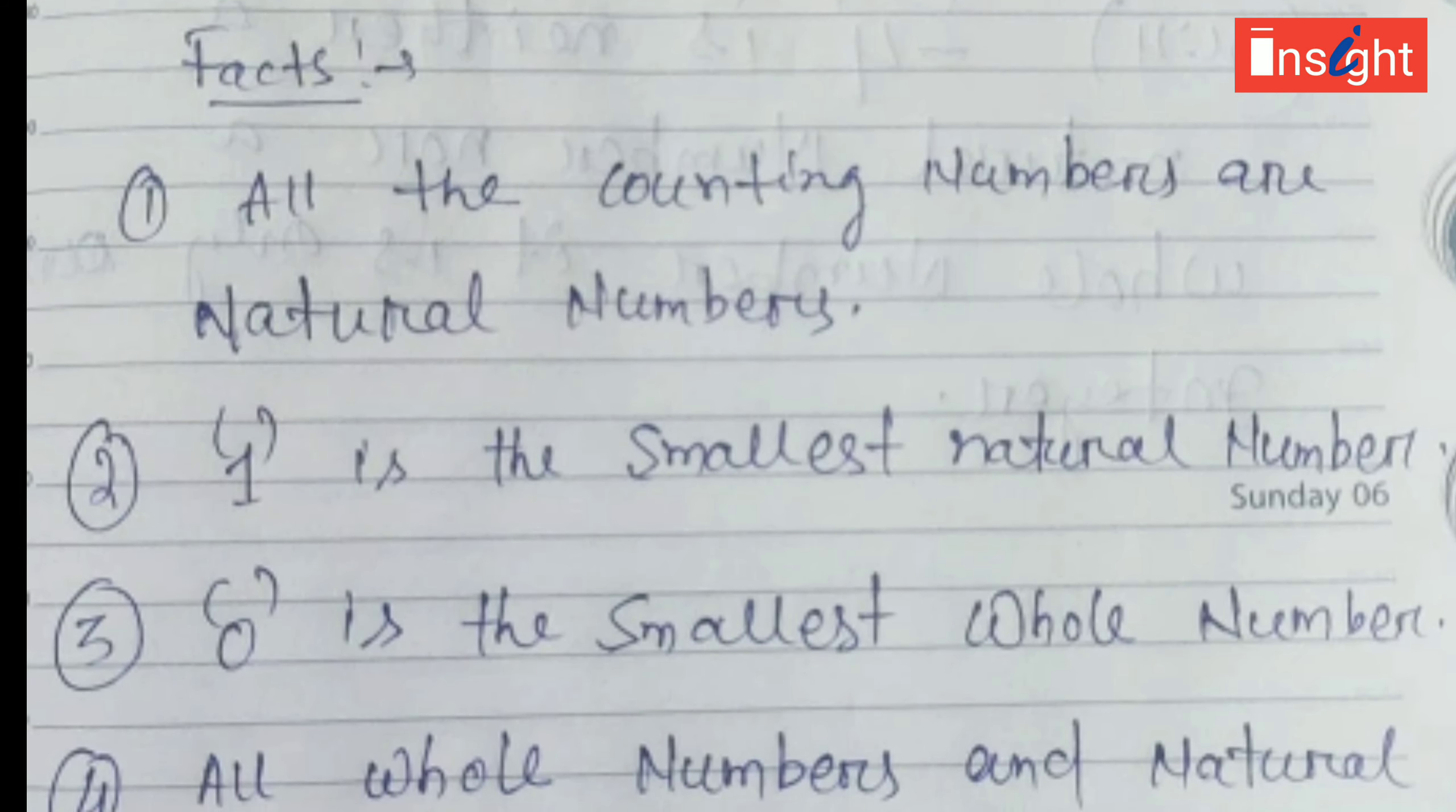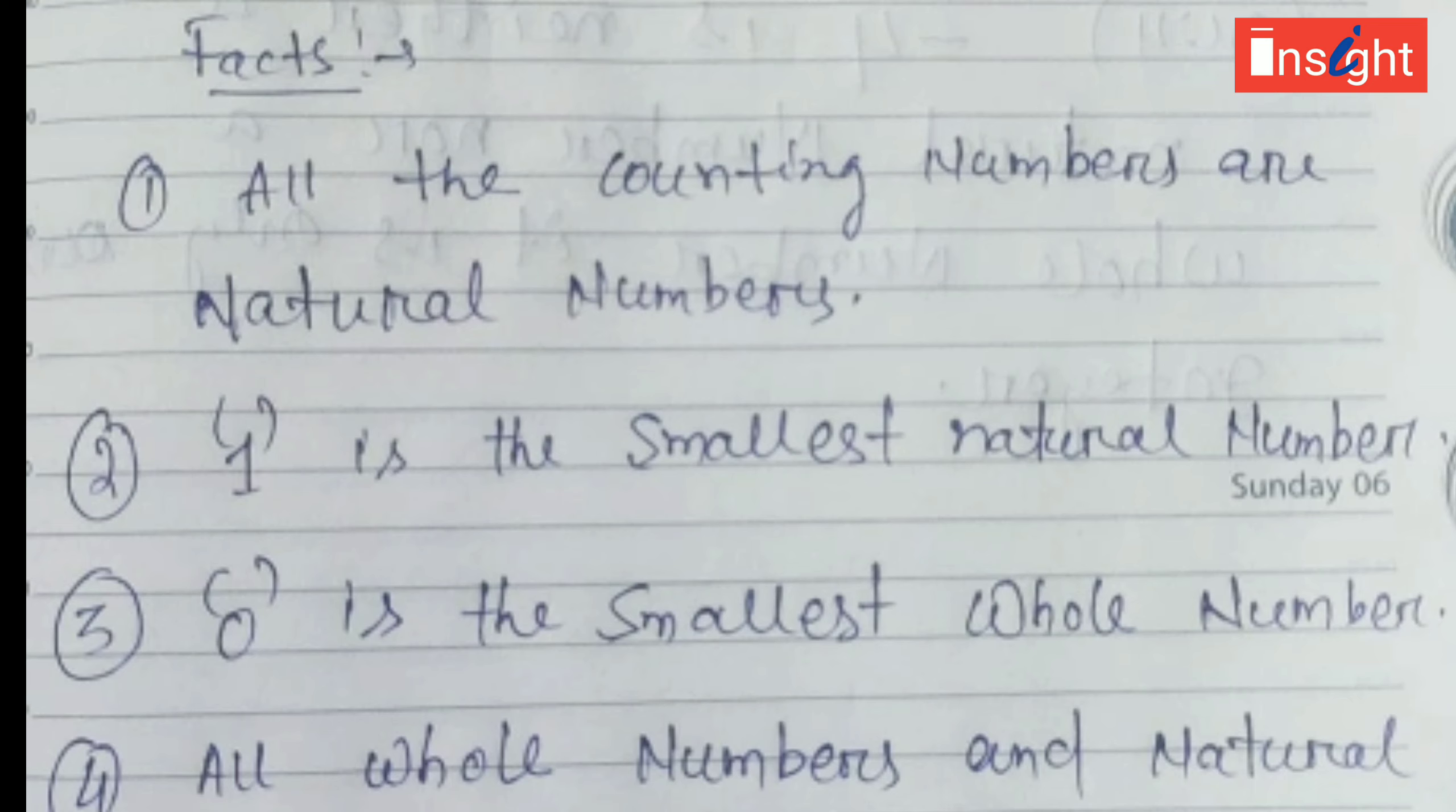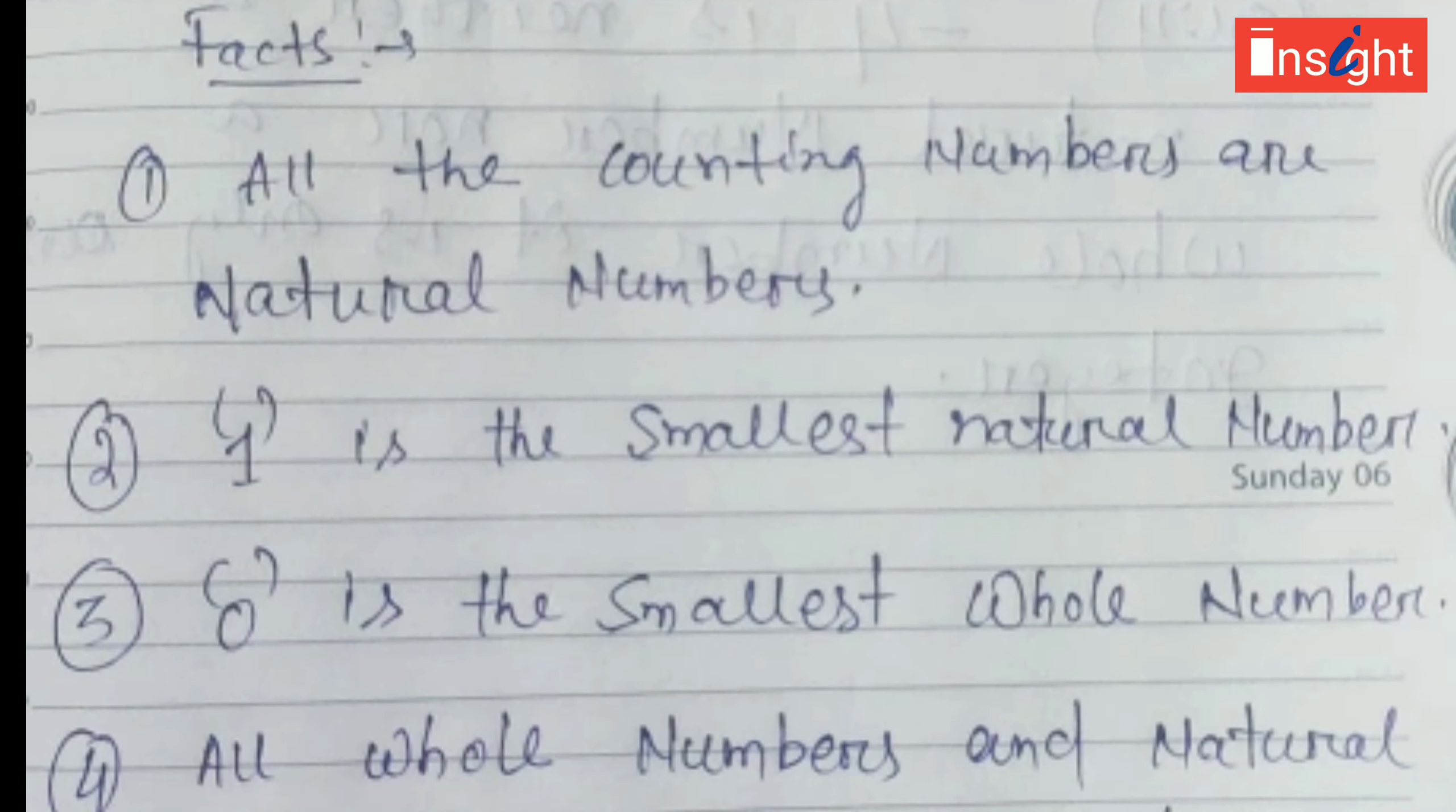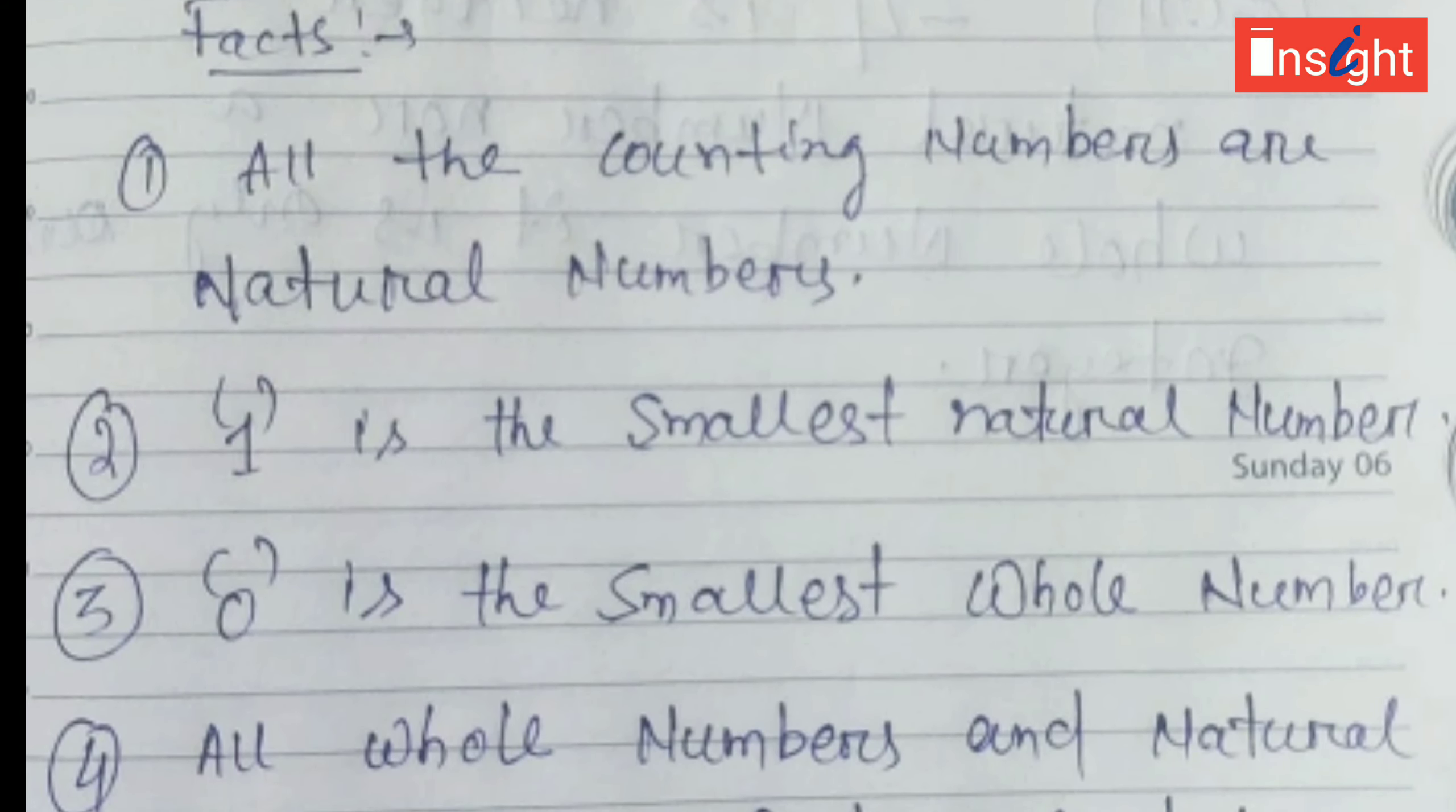We should know some important facts about number system. All the counting numbers are natural numbers. One is the smallest natural number because inside natural number we start our counting from one. Similarly in whole numbers, zero is the smallest whole number because we start counting the whole numbers from zero.